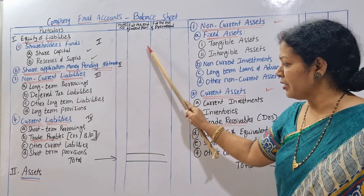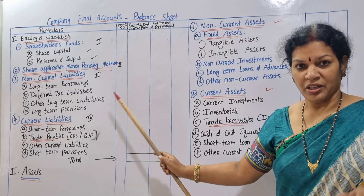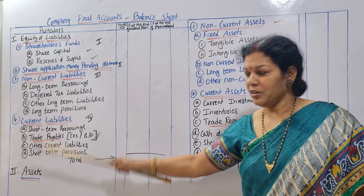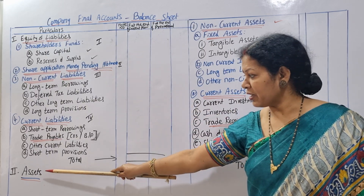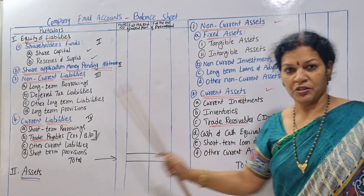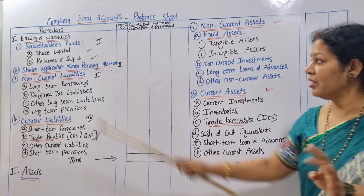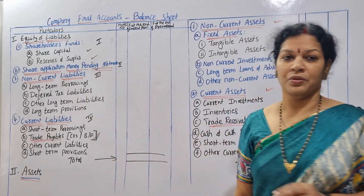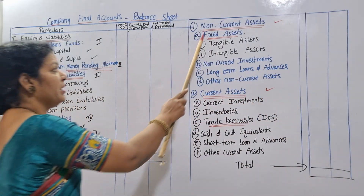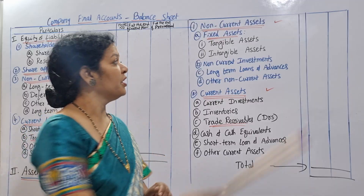This is total equity and total liabilities. The total of assets must equal the same. Assets have only two parts: non-current assets and current assets. Now, we focus on non-current assets.